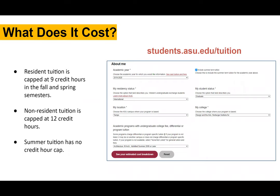So a big question we get: what does it cost? There is a tuition calculator that we always link when we have this discussion with students. You can find that at students.asu.edu/tuition. You'll go through a few options to select it for design students, depending on your academic year, your residency status, and your student status. You'll select graduate, your college will be Design and Arts, the Herberger Institute, and then depending on your program. Resident tuition is capped at nine credit hours.